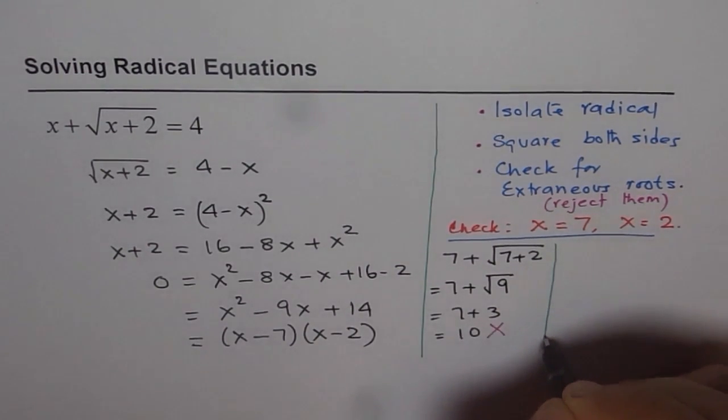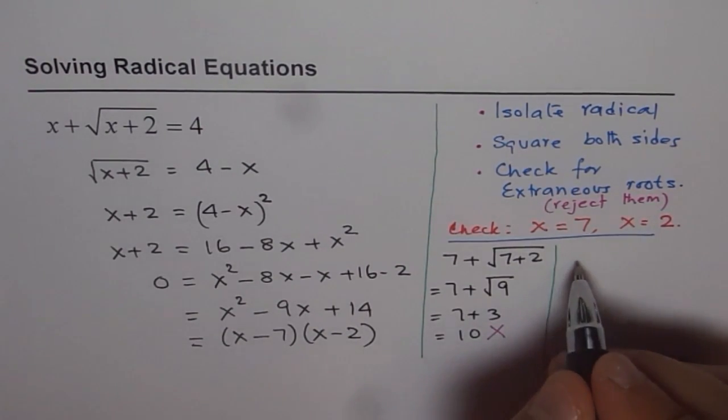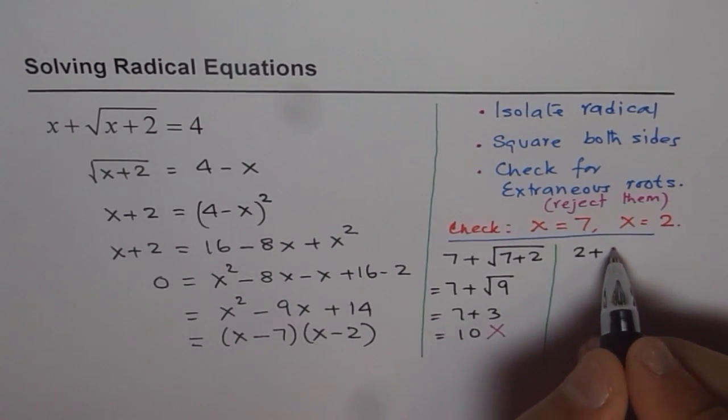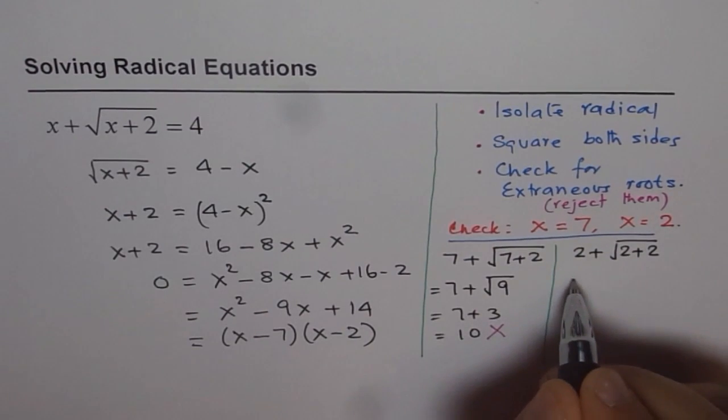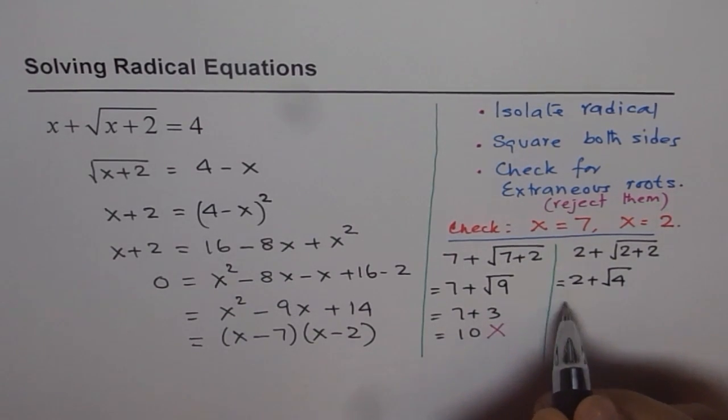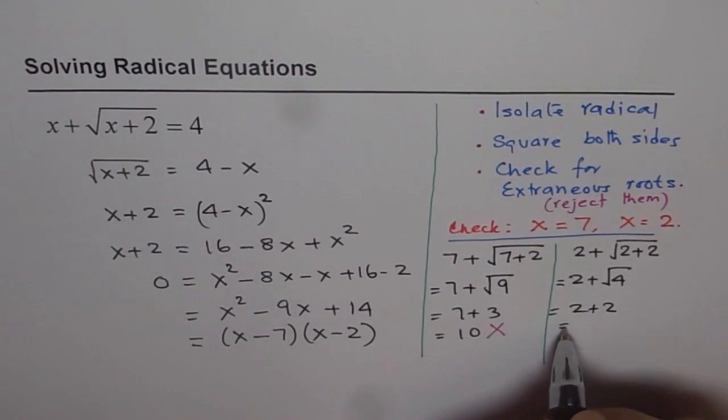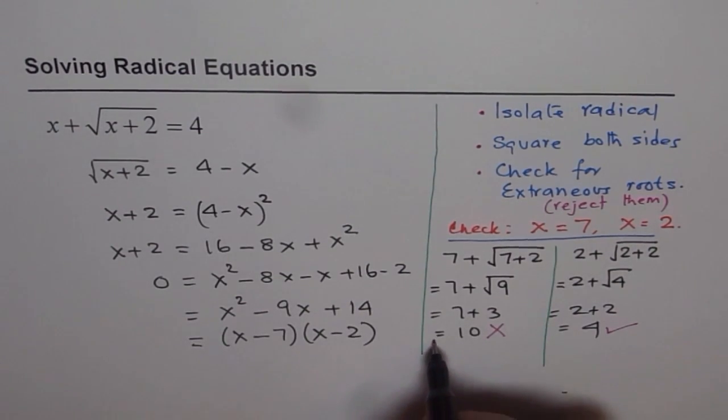Now, let's check the other root which is x equals to 2. So, if I write 2 here, I get 2 plus square root of 2 plus 2. That is 2 plus square root of 4 and that is equal to 2 plus 2 which is indeed 4. And this solution is correct. So, this one is extraneous root.